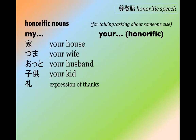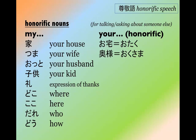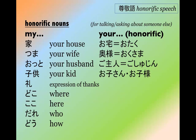There are also a bunch of nouns used honorifically. If my house is uchi or ie, your house is otaku. A wife or my wife is tsuma, but your wife is okusan or okusama. My husband is otto, but your husband is goshujin. A kid is kodomo, but your kid is okousan or okosama.